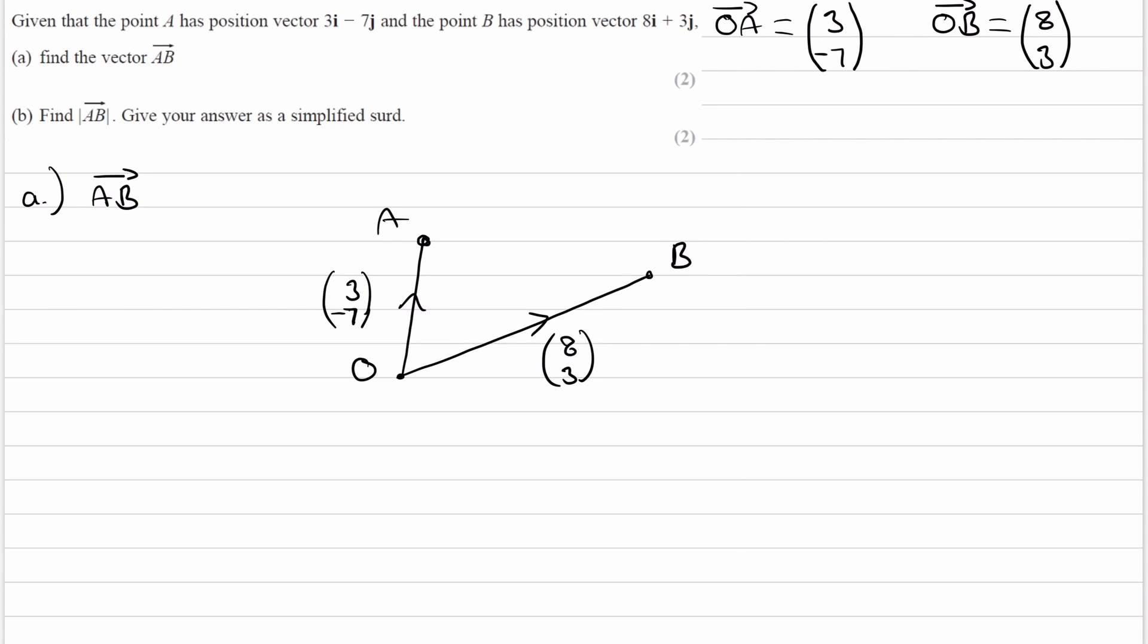We're trying to work out AB, so that is the vector connecting A directly to B. So we're trying to work out what this is. We can do that by going along this path from A to O, and then from O to B.